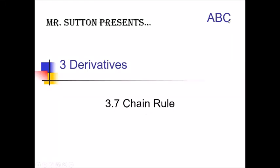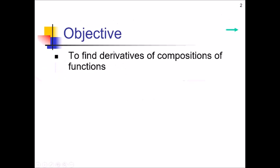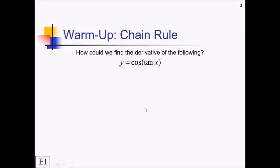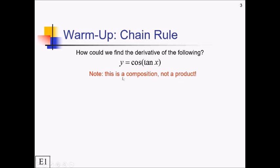Hi there, Mr. Sutton bringing you the AB Calculus 3-7 lesson on the chain rule. In this one, we will be taking derivatives of compositions of functions. To start off this lesson, how do you think we could find the derivative of y equals cosine of tan of x? We need something called the chain rule.